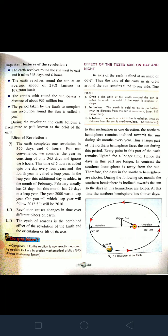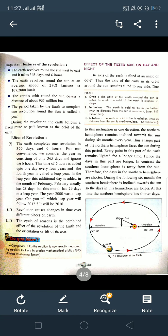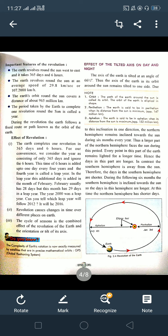Revolution causes changes in time over different places on the earth. It also causes the cycle of seasons through the combined effect of the revolution of the earth and the tilted axis of the earth.